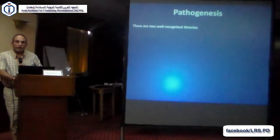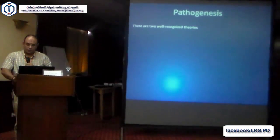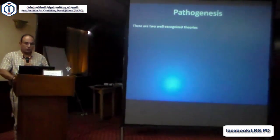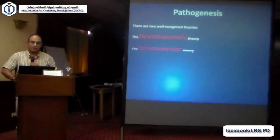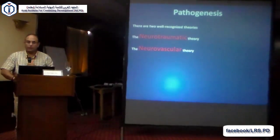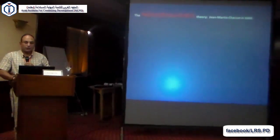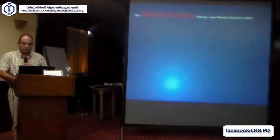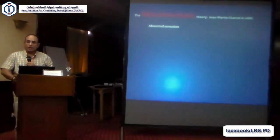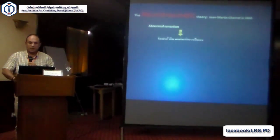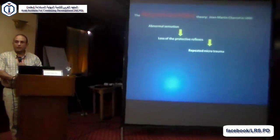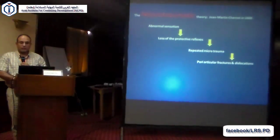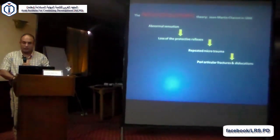There are two well-recognized theories for the pathogenesis of Charcot Neuro-Osteoarthropathy. The first is the neurotraumatic theory, and the second is the neurovascular theory. The neurotraumatic theory was put forward by Charcot himself. In this case, you have loss of normal sensation leading to loss of protective reflexes, so you have repeated microtrauma leading to periarticular fractures and dislocations.